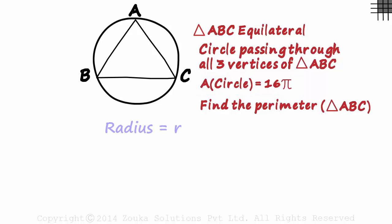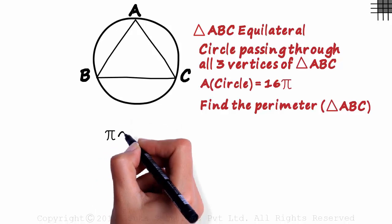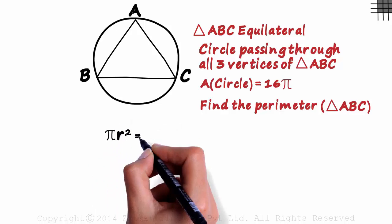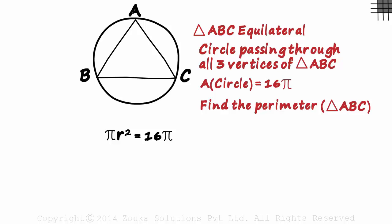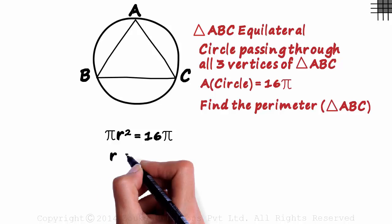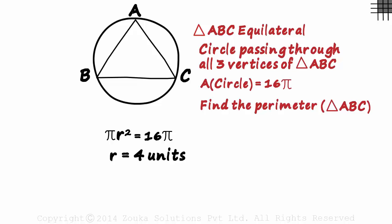If we assume the radius to be R, then we can say that pi R squared will equal 16 pi. Solving this, we get the value of R as 4 units. The relation we had looked at was S is equal to R root 3. So the length of the side of the triangle will be 4 root 3 units.